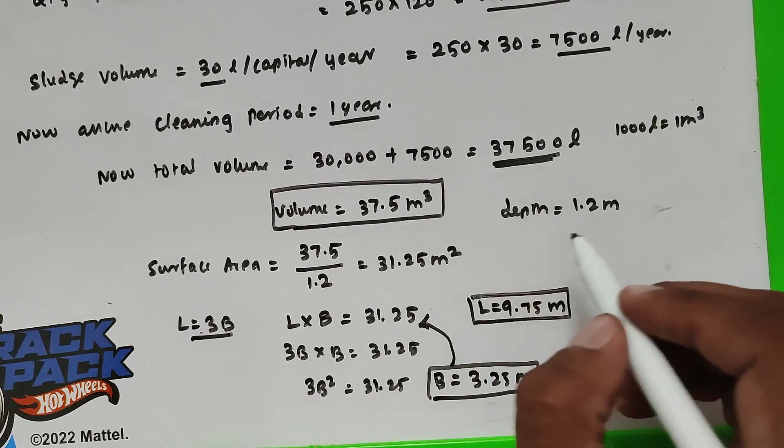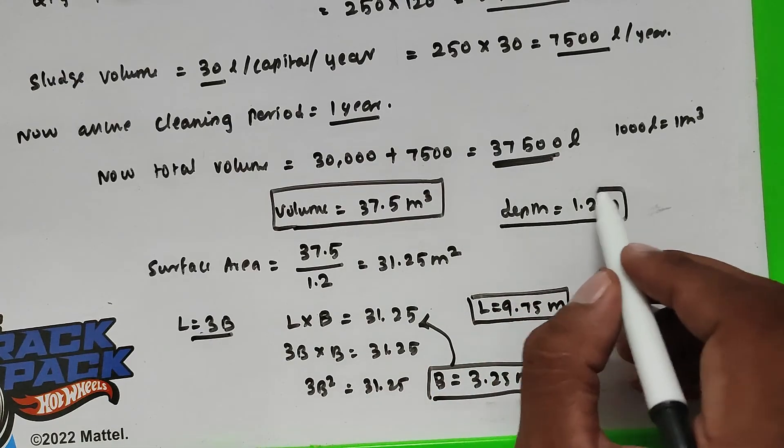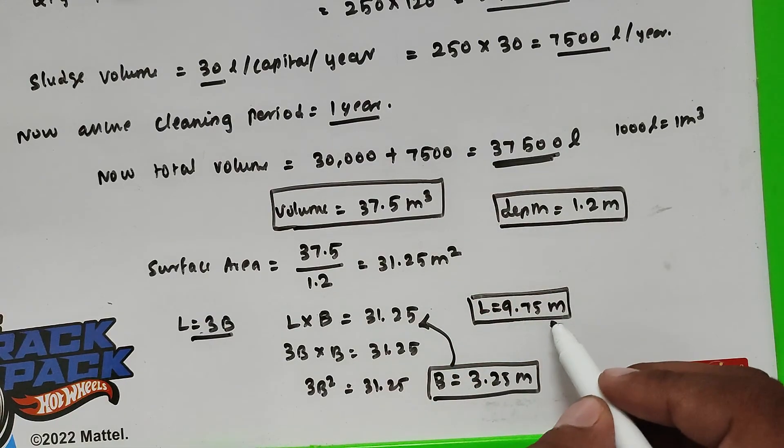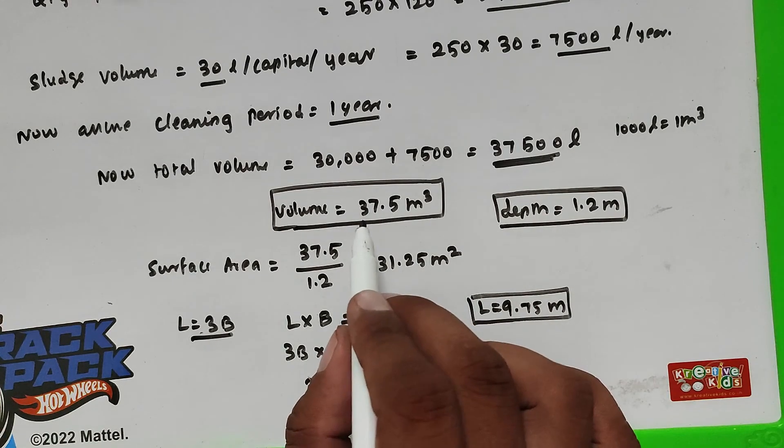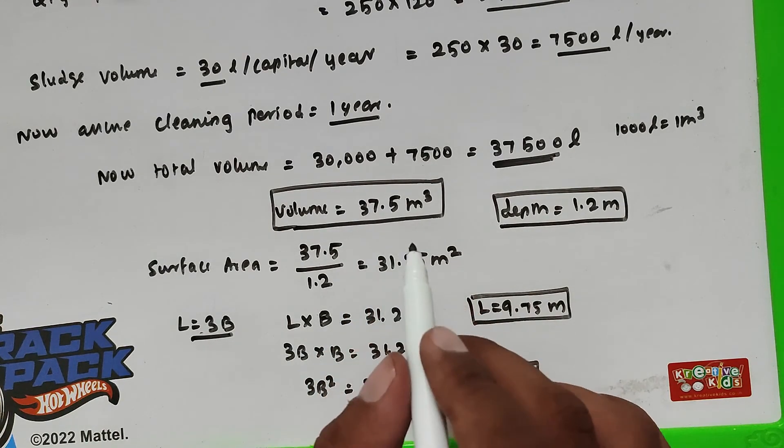So now we came to know that the length is 9.75 meter and the breadth is 3.25 meter and the volume is 37.5 m³.